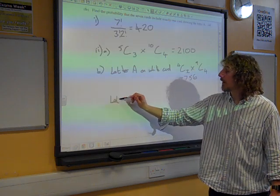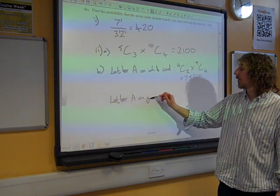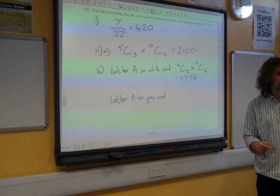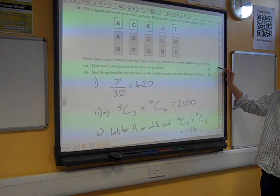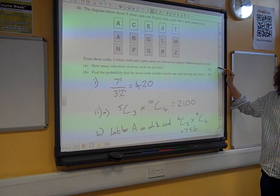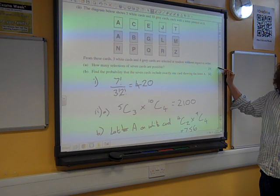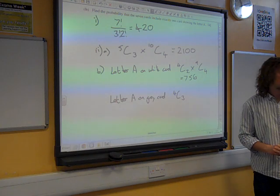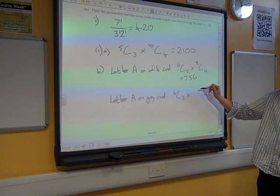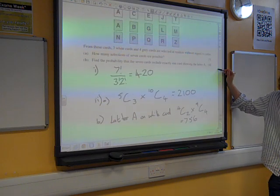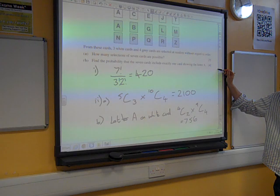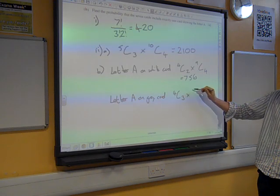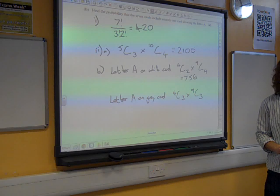Or the letter A could have been on a grey card. And so thinking of how many ways that could happen, well that means that we definitely didn't choose the white card, letter A. So from the four white cards, we chose three of them. And from the grey cards, we definitely did choose the letter A. So that's one of the four cards. So the remaining three came from the remaining nine cards. So it's 9C3. Does that make sense?